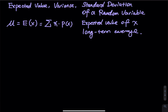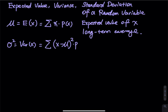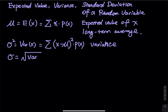Next, we have variance, written as sigma squared — that is the variance of x. It equals the sum where you take each outcome, subtract the expected value, square the result, and then multiply by the probability. You do this for every single outcome and sum up all the products — that gives you the variance. Since variance has a square unit, we take the square root of it to get the standard deviation.